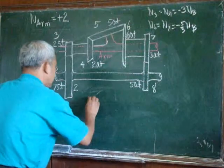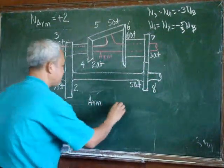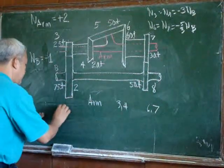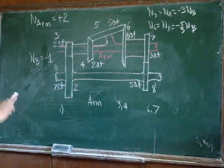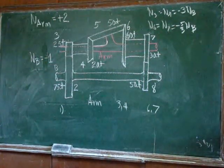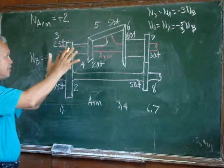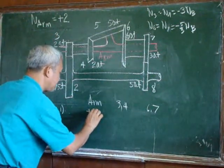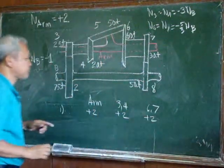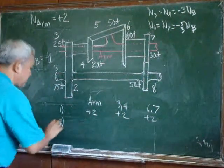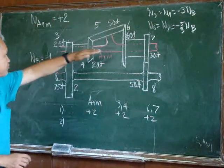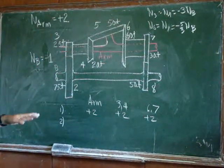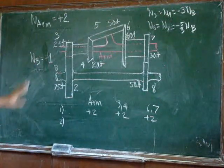Let us now set up our tabulation. We'll have a column for the arm, for gears three and four, and for gears six and seven. That's the first step in our solution of this epicyclic gear train problem. We have to lock them all together and rotate the whole mechanism — and in this particular problem, we have to rotate them two times.